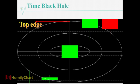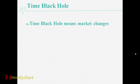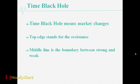Let's see the top line, the middle line, and the bottom line. All the lines have support and resistance for the stock price. Time Black Hole means the market will change direction. The top line stands for resistance. The middle line is the boundary between strong and weak. The bottom line stands for support.